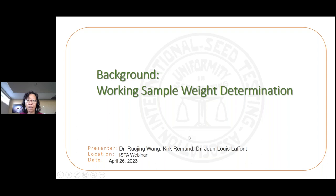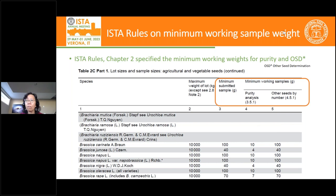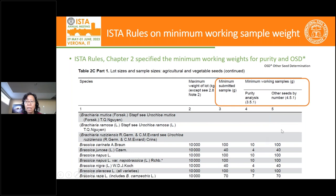Good morning and good afternoon everybody. Today I'm very glad we have a statistical committee statistician to help us develop a tool and a method for determining working sample weight. Before they start their presentation and show the great tool we have now, I'll give a little bit of background explanation. Working sample weight is part of the ISTA rules. In chapter two, there is a minimum submitted sample, a minimum purity analysis sample weight, and a minimum other seed determination by number weight.